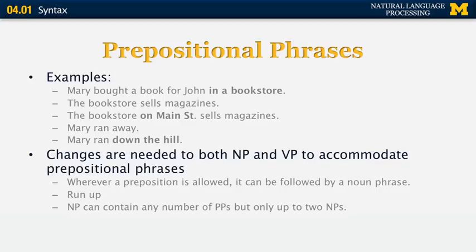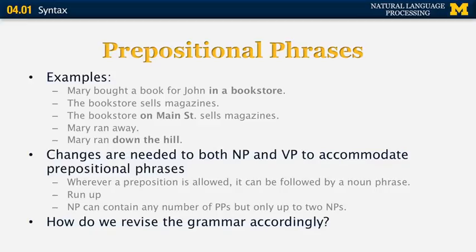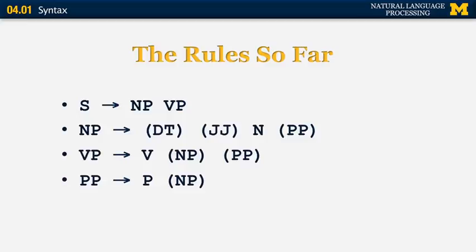The rule is simple: wherever a preposition is allowed, it can be followed by a noun phrase — for example, run up versus run up the street. A noun phrase can contain any number of prepositional phrases. When we revise the grammar, S goes to NPVP; a prepositional phrase is a preposition followed by an optional noun phrase. Crucially, rule two shows that a noun phrase can generate a prepositional phrase, and rule four shows that a prepositional phrase can generate a noun phrase — giving us our first instance of recursion. We can apply these rules in an arbitrarily long sequence to produce very long sentences.